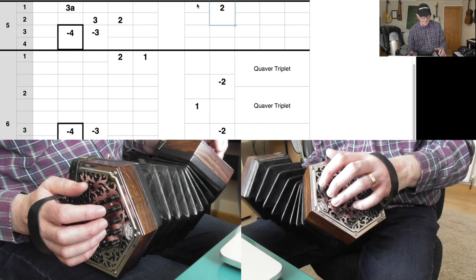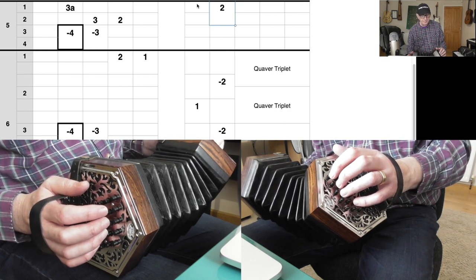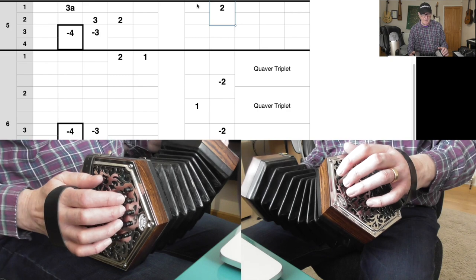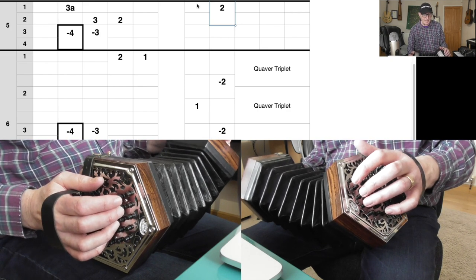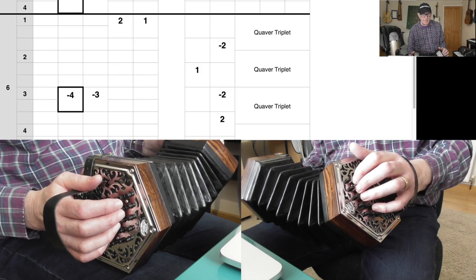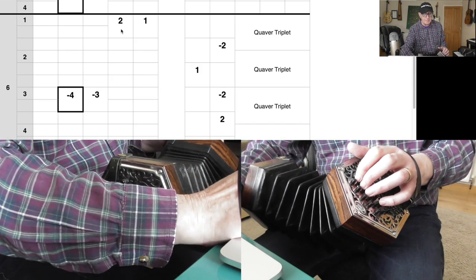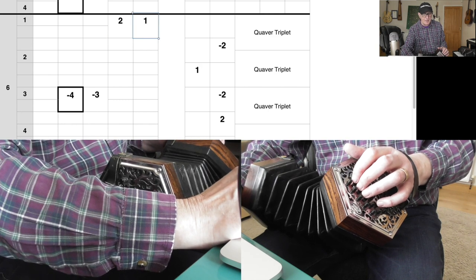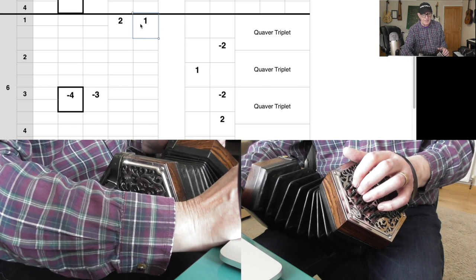Let's put that together then. In bar six, you come back to this pair of notes which we played loads—buttons four and five, fingers two and one on the push.